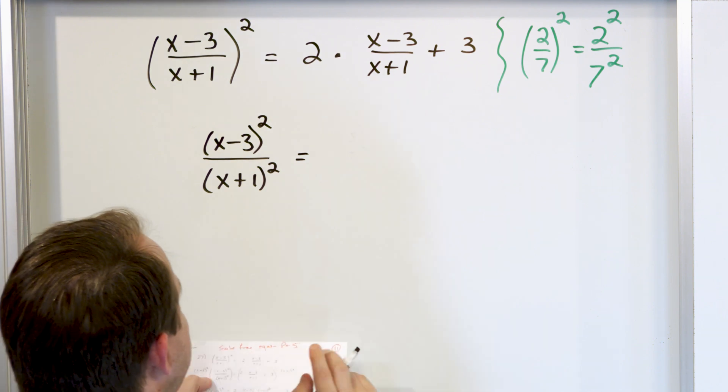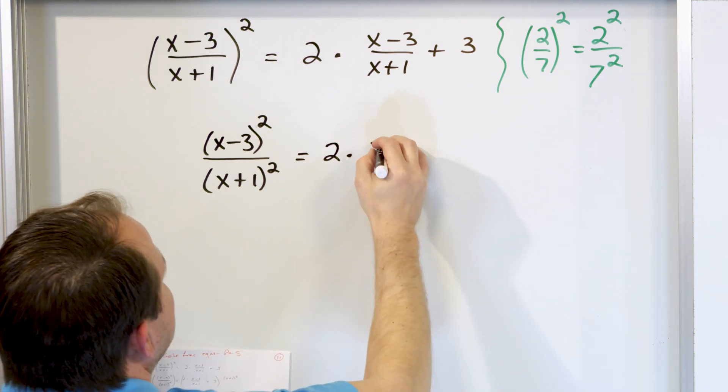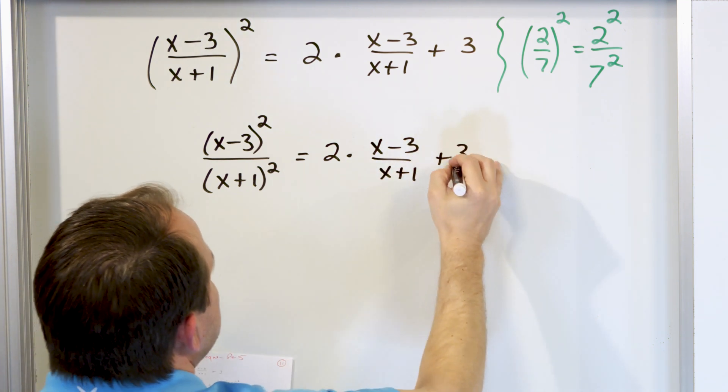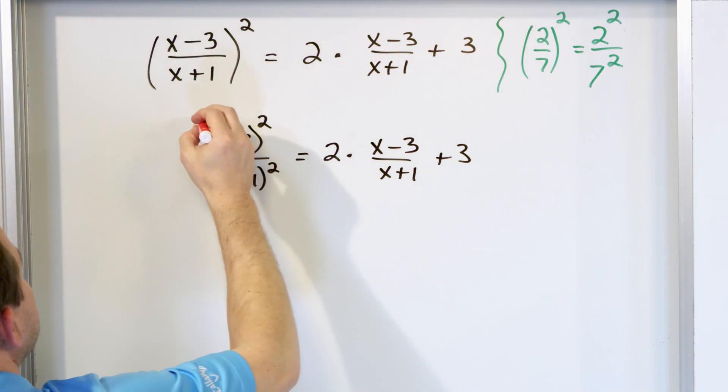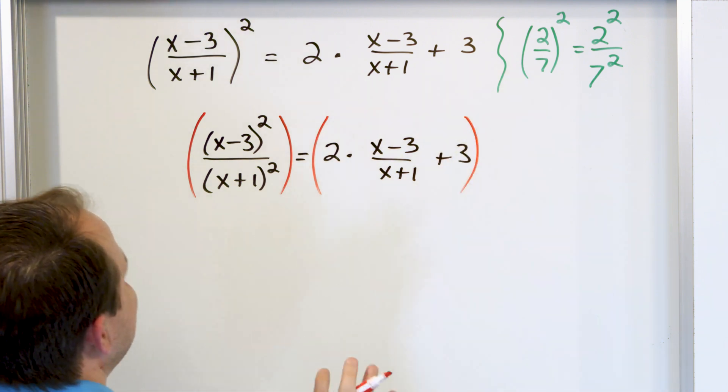Now on the right-hand side, for now, I want to write it exactly as it's written, 2 dot, which means multiply, (x-3)/(x+1), plus 3. Now we need to figure out what to multiply left and right-hand side by. So let's wrap our parentheses here, and wrap our parentheses here. We have to multiply the entire side.